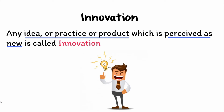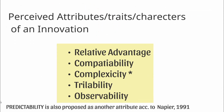Innovation is any idea, practice, or product which is perceived as new. We have to understand that this innovation can be a creation somewhere else at some point of time, and it can be new at another social system at another point of time. Any social system — in our case, the farming community — considers innovations by the perceived attributes of those innovations.